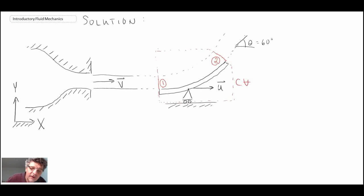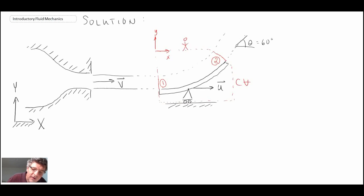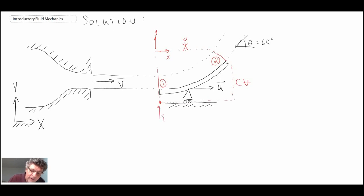Another thing we'll do — remember, this is a control volume that is moving. So we have a moving reference frame; we'll give that a little x and a little y. We're going to draw a little person on here, because that person is moving with the control volume. Finally, we're looking for a force to maintain velocity U at a constant value. We will have a reaction force in the y direction and a reaction force in the x, drawn in positive x and positive y directions.